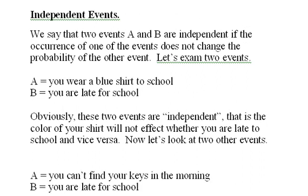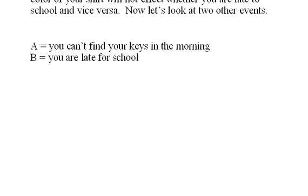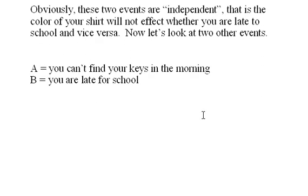A: you can't find your keys in the morning. B: you are late for school. Well, it is clear from this that... let me just explain it. If you can't find your keys in the morning, it's going to change the probability of whether you're going to be late for school. So these events are not independent. We say they are dependent events.